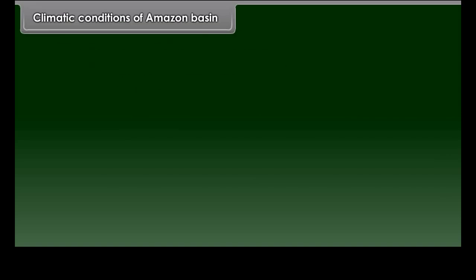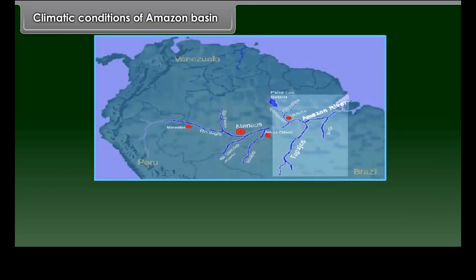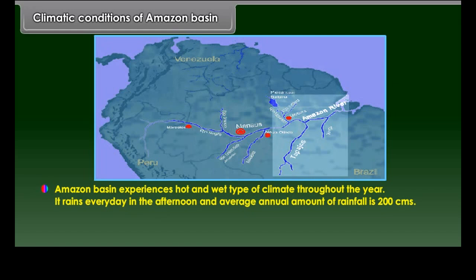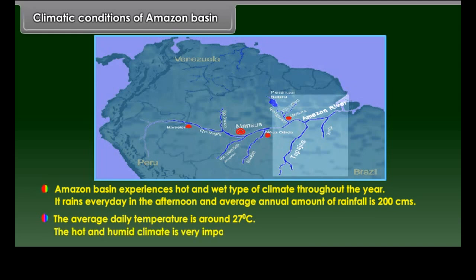The Amazon Basin experiences a hot and wet type of climate throughout the year. It rains every day in the afternoon, and the average annual amount of rainfall is 200 cm. The average daily temperature is around 27 degrees Celsius. The hot and humid climate is a very important factor for the dense growth of vegetation.